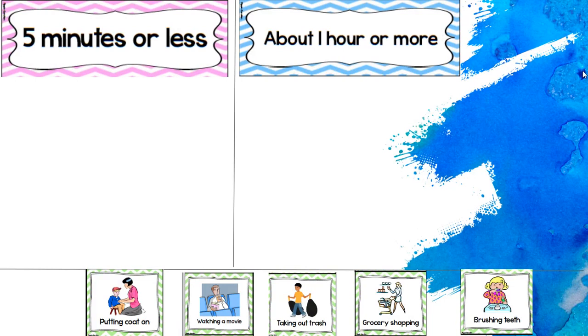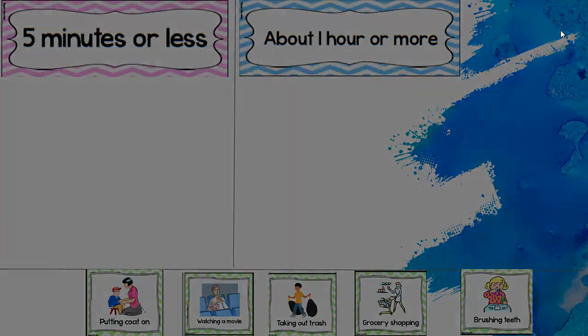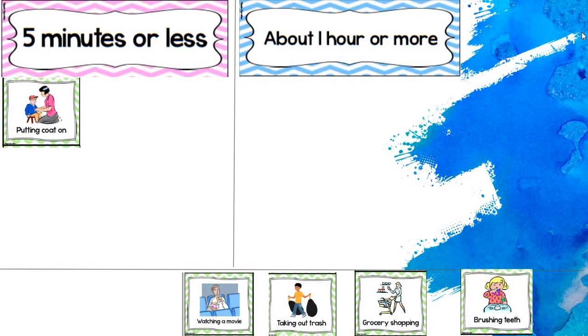Now, let's look at five minutes or less or about an hour or more. So remember, five minutes or less would mean it's short. About an hour or more means it takes a longer time to do. So putting on a coat. What do you think? Is that five minutes or less or is that about an hour or more? That's five minutes or less. That's quick.